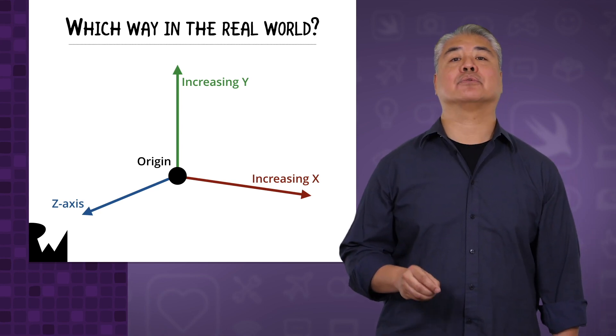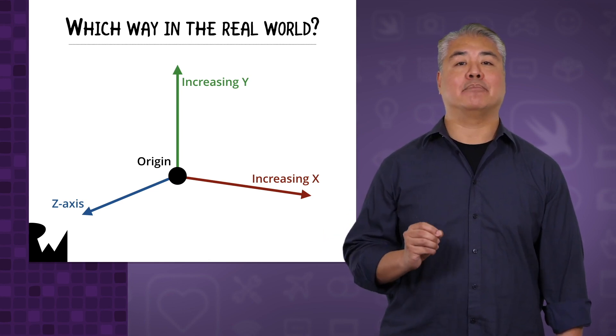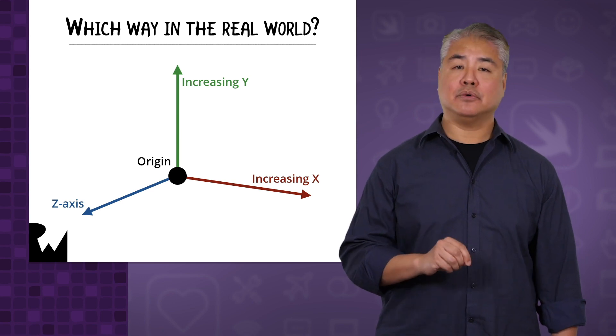ARKit gives you the option to choose from three different ways to determine which way is left, right, up, down, backwards, and forwards. Each way has its uses. We'll use two of them in this course.